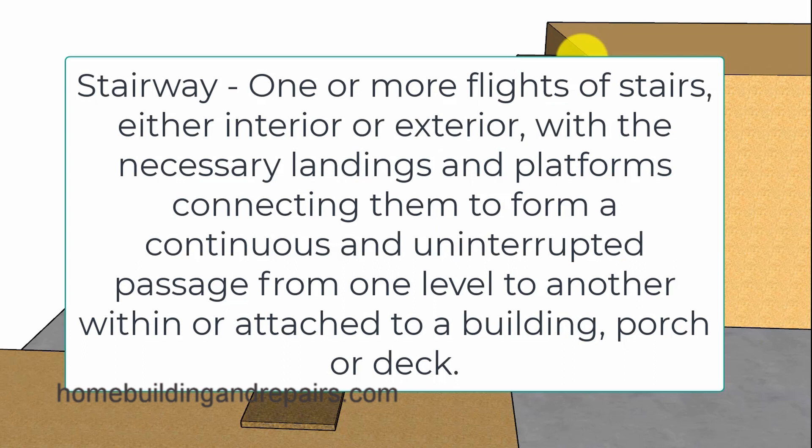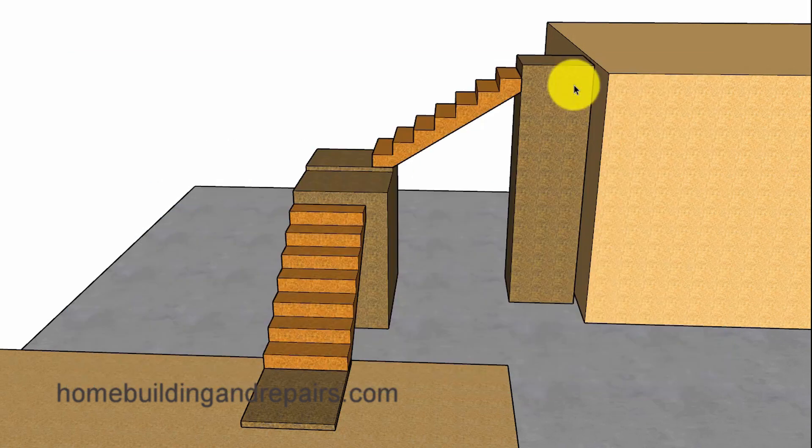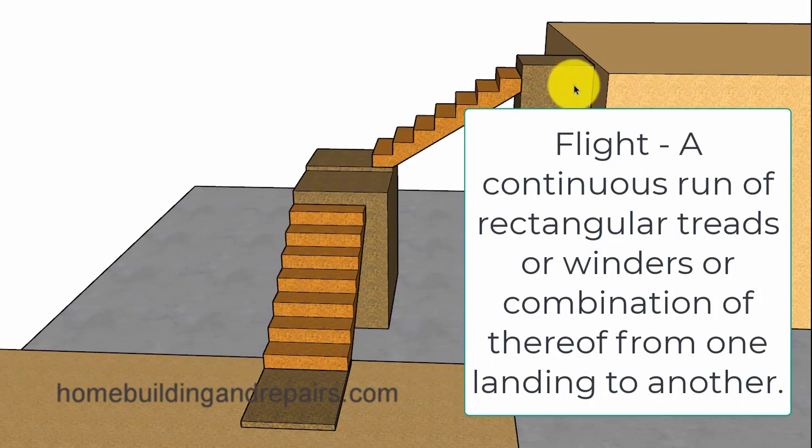A stairway is one or more flights of stairs, either interior or exterior, with the necessary landings and platforms connecting them to form a continuous and uninterrupted passage from one level to another within or attached to a building, porch, or deck. Next, let's go ahead and take a look at the word flight. And the definition of that is a continuous run of rectangular treads or winders or combination thereof from one landing to another.